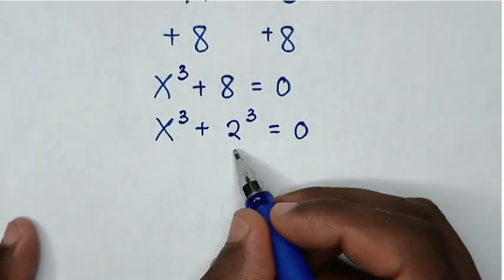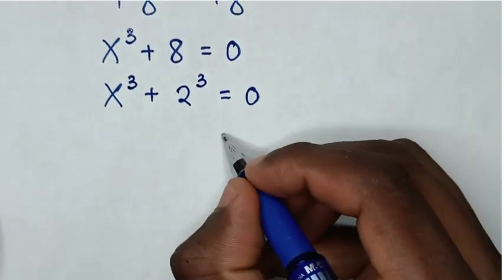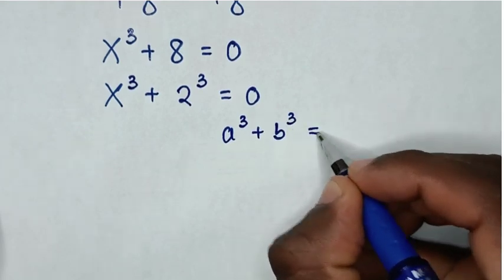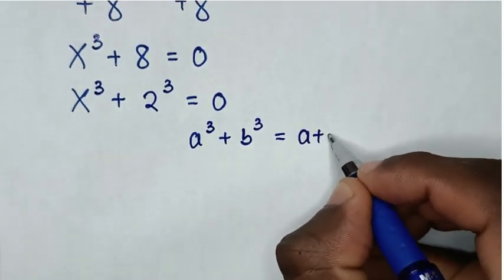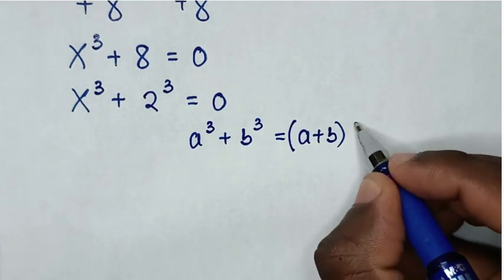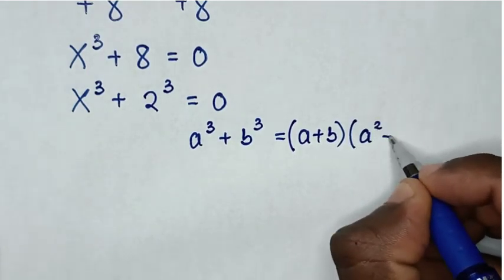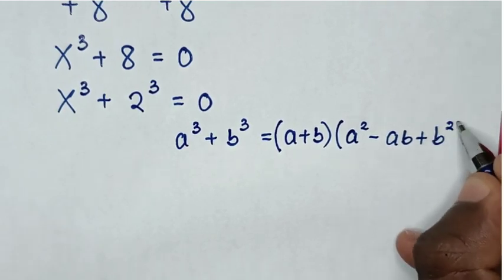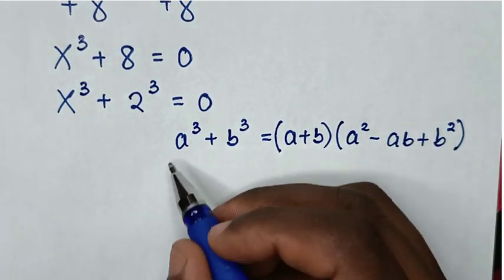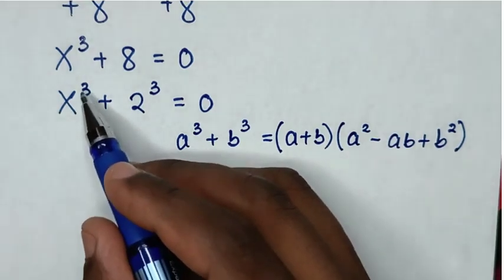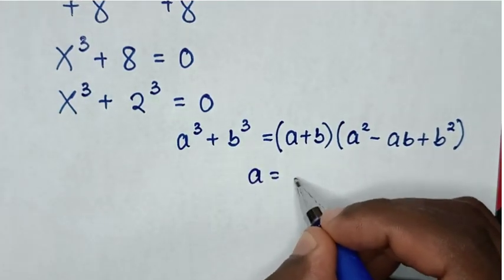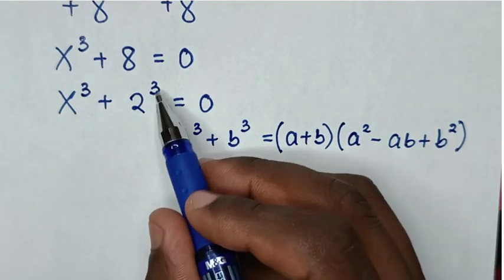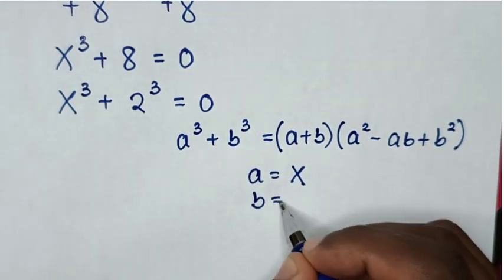This part is in the form of a perfect cube. So we'll apply the rule a³ + b³ = (a + b)(a² - ab + b²). When we compare a³ with x³, then a is equal to x. And when we compare b³ with 2³, then b is equal to 2.